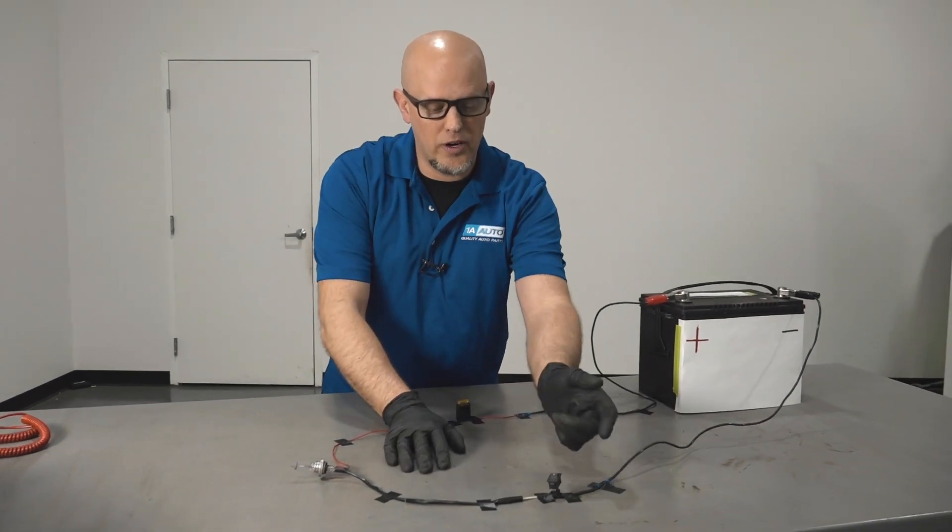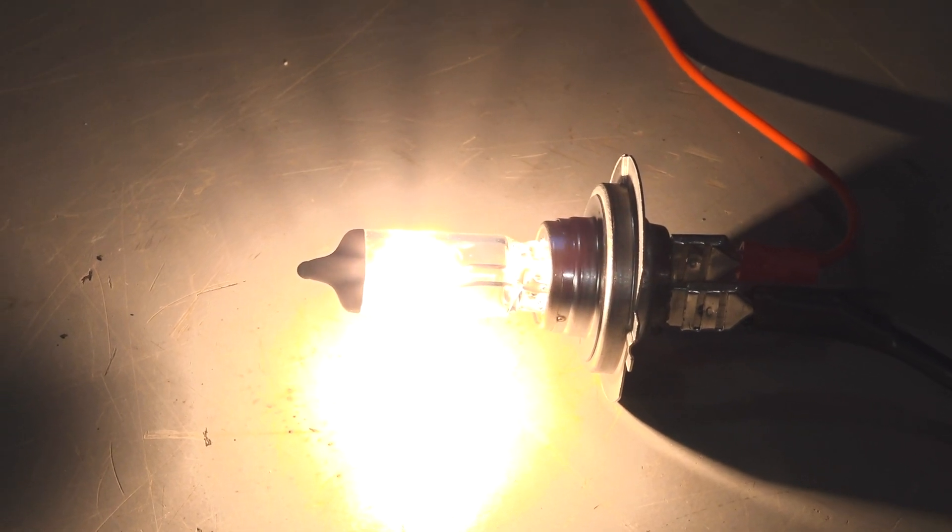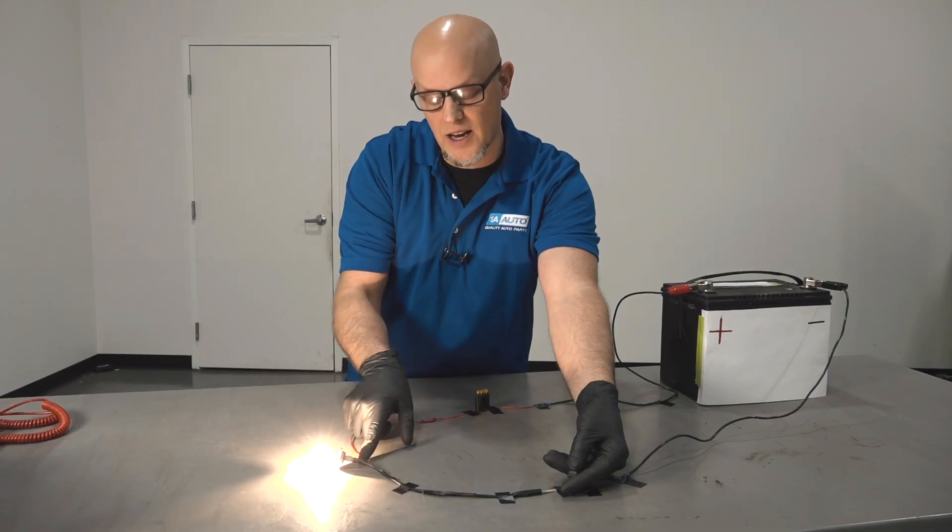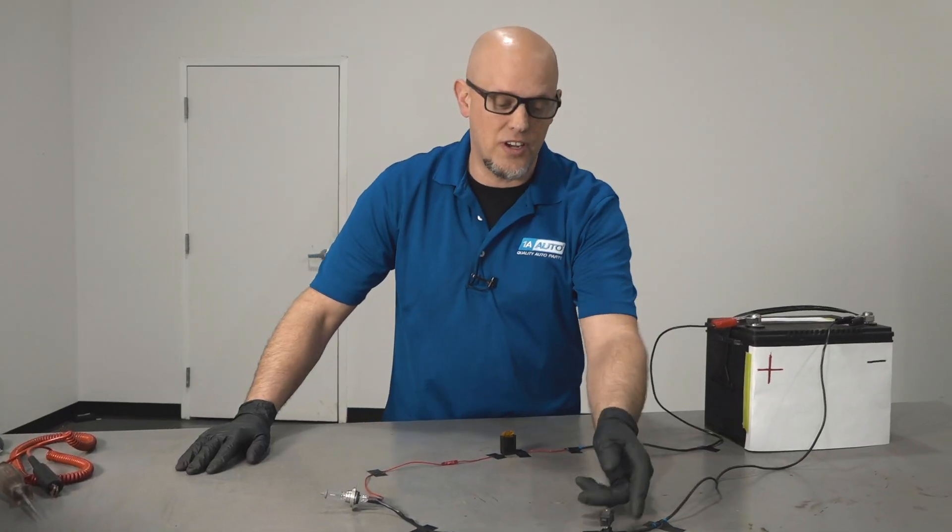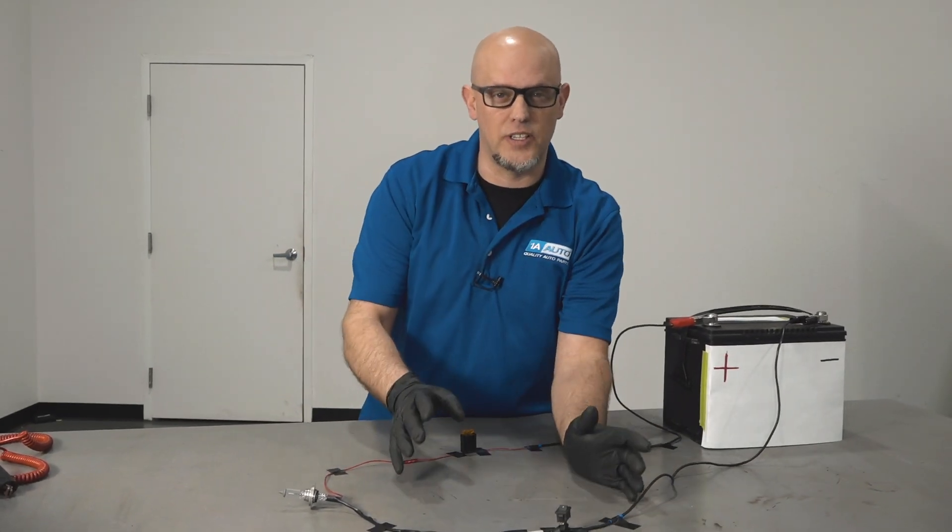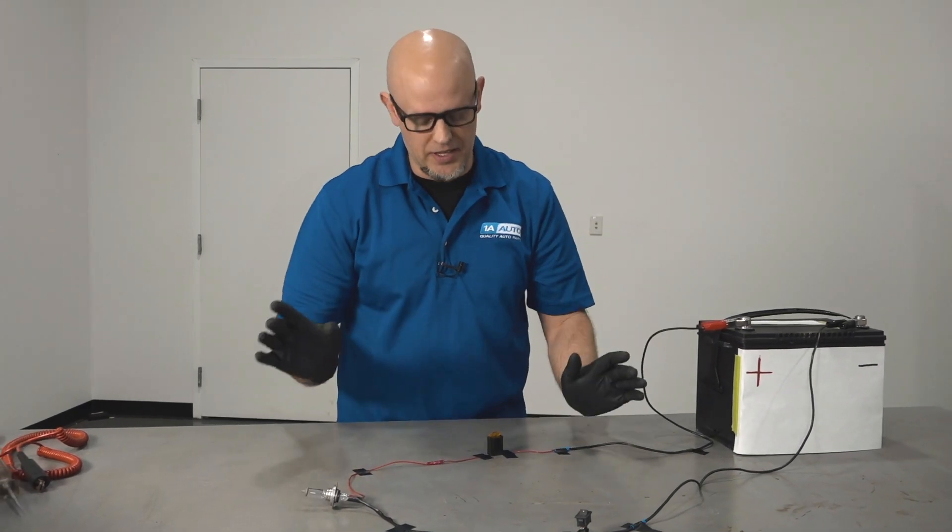To make this circuit work, we need to flip the switch on. So now we have battery negative or ground and battery positive going to the light bulb. If your light's not turning on and you have an electrical issue, whether it be a light or something else in your vehicle, the best place to start is the fuse.